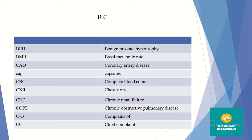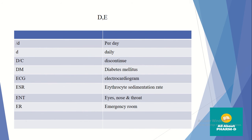CO means complaints of — for example, complaints of fever, hypertension, or coronary artery disease — used in prescriptions. CC means chief complaint, the main complaint the patient has. Slash D means per day. Small D means daily. DC means discontinue. DM means Diabetes Mellitus. ECG is Electrocardiogram. ESR means Erythrocyte Sedimentation Rate.